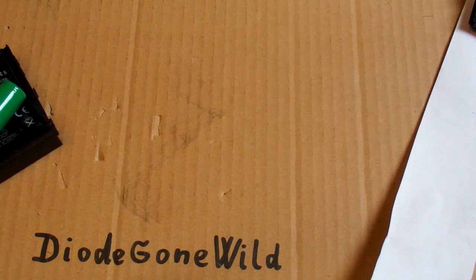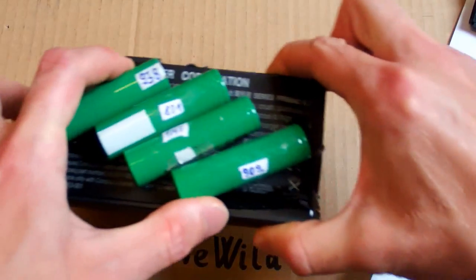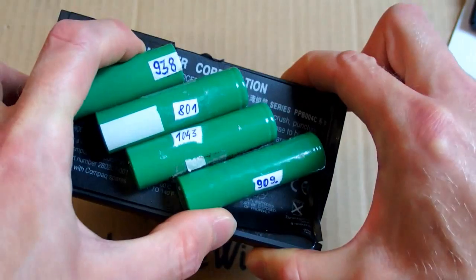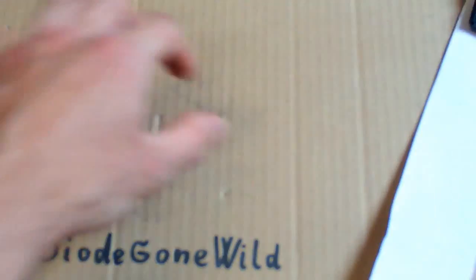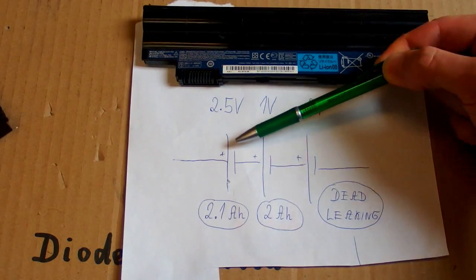So opening a laptop battery is like a lottery. You can be lucky and you can find a battery which is almost like new. Or you can find a battery which is evenly worn and all of the cells have about half of the capacity. And you can also find a battery where one of the cells is completely dead and the other ones are like new.